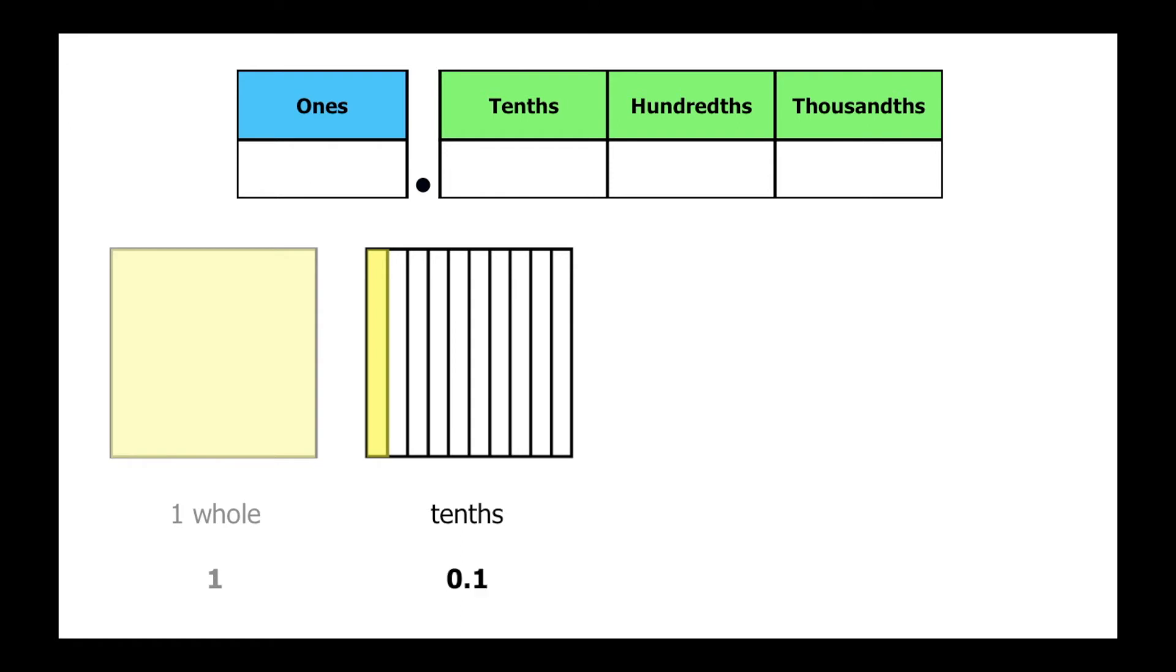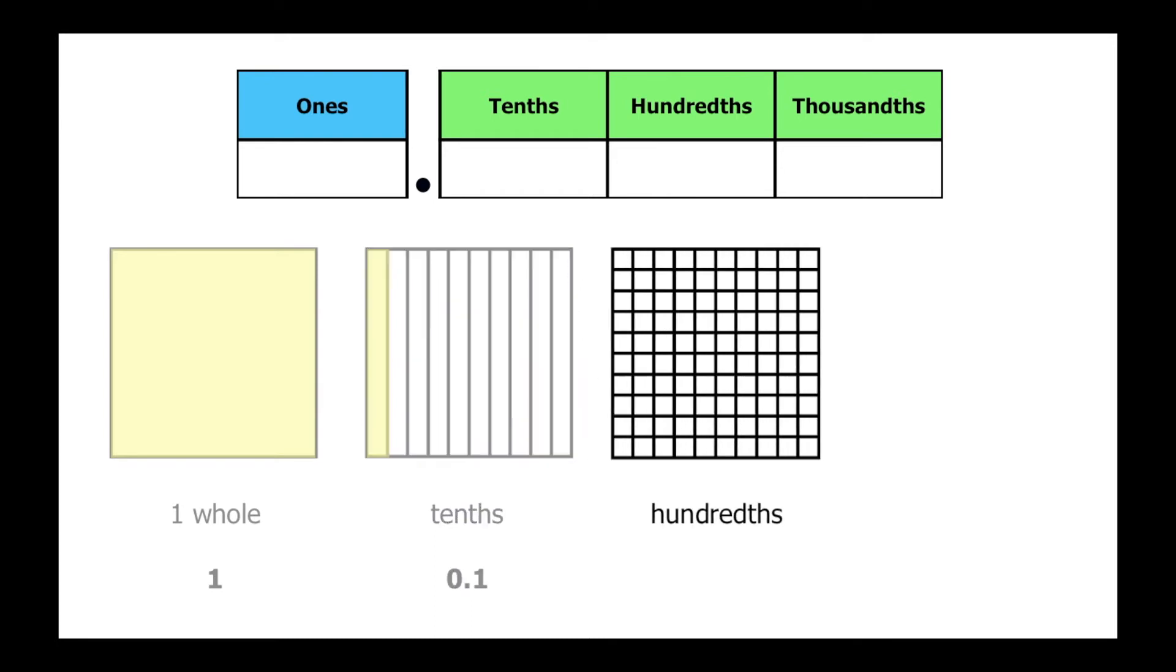This time, we'll divide our square into 100 equally sized parts. Notice how our parts are getting smaller each time. Each part represents one one hundredth of a square. Like before, we'll shade one of the parts yellow.